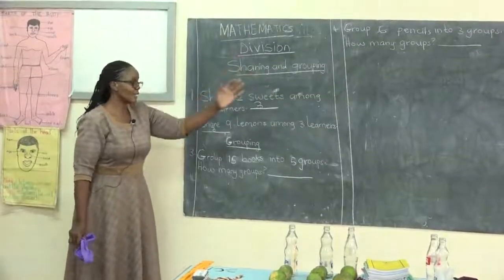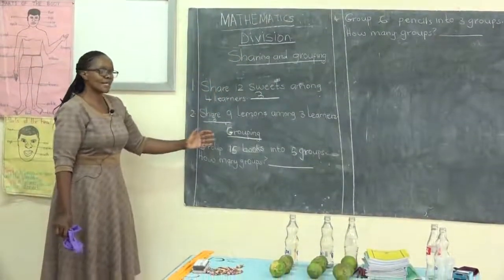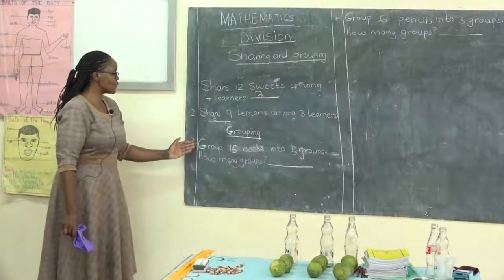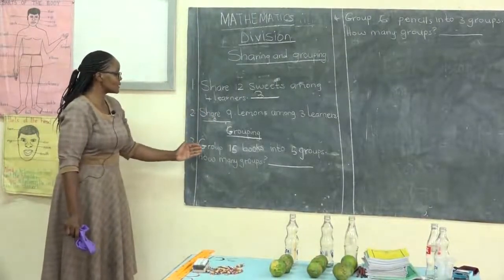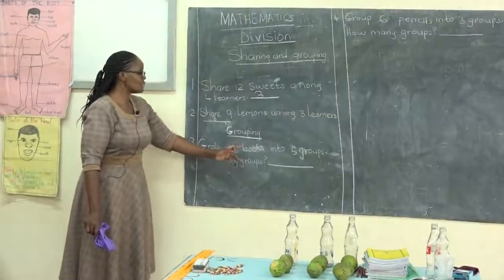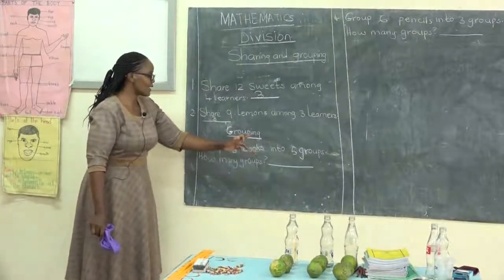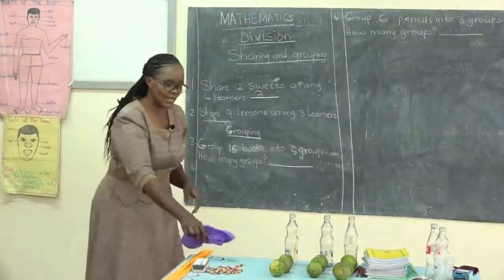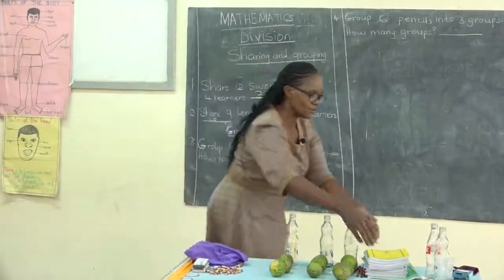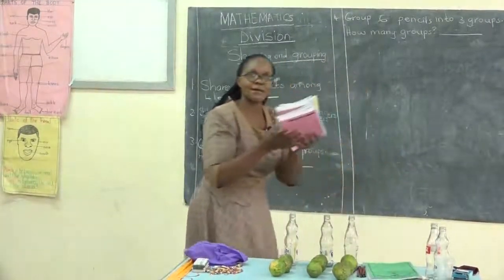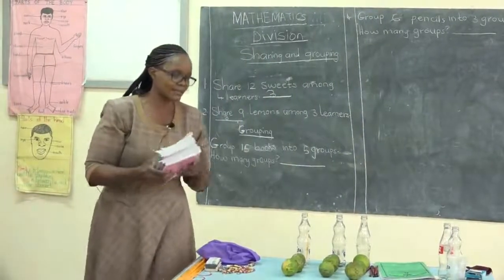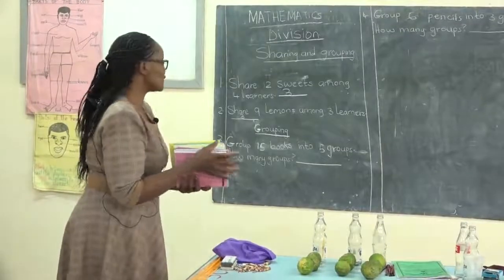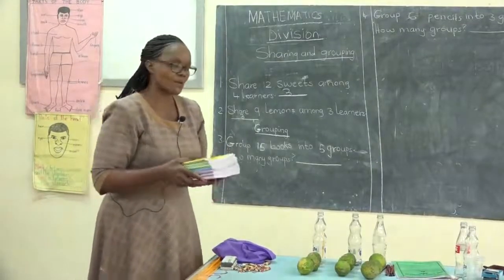Now we want to do grouping. Remember our subtopic is sharing and grouping. I want to demonstrate how you are supposed to group. Our first grouping question is: group fifteen books into five groups. Here are my fifteen books, and we are supposed to group them into five groups — that means one group should have five books.